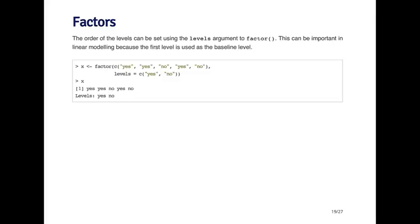This may not be what you want. You might want yes to be the baseline level and no to be the second level. In that case, you have to explicitly tell R that yes is going to be the first level using the levels argument to the factor function. When I print out X, the elements are still yes, yes, no, yes, no, but the levels attribute is reversed because yes is the first level and no is the second.